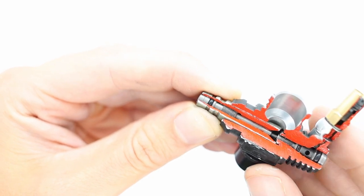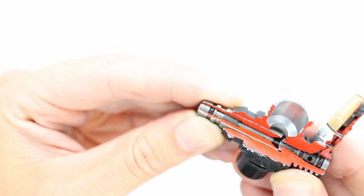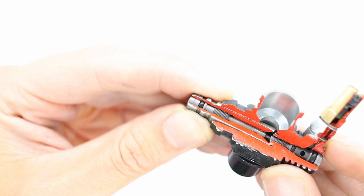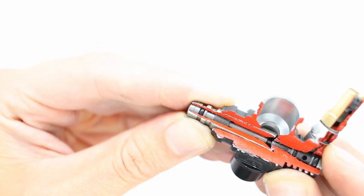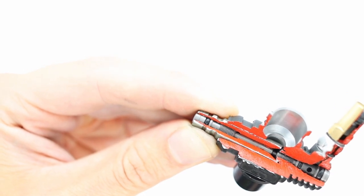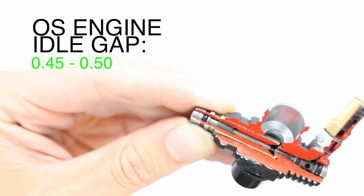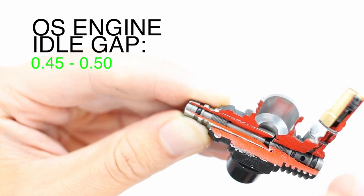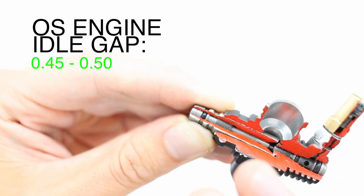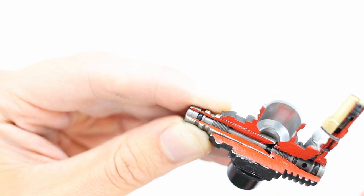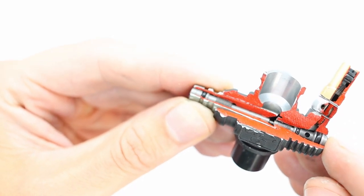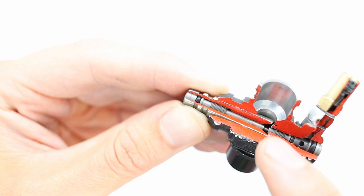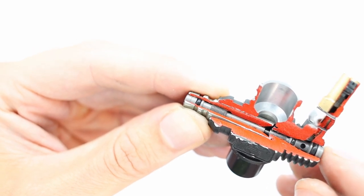And again, the revs are high. So then he closes the idle gap a bit more. And eventually he'll reach a stage where the idle gap is at the correct setting. On an OS, it will be 0.45 to 0.5. And when the engine goes to idle, it just stays at idle. It doesn't drop anymore. There's no more double idle. So that's how an experienced engine tuner can essentially achieve the correct idle gap without measuring it.